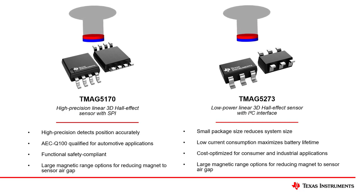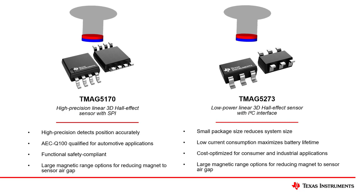The second device is the TMAP5273, which is a lower cost device than the TMAP5170. The small package size and low current consumption of the device allows it to be used in battery-operated, compact joystick designs.